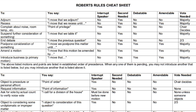Another motion is tabling — to suspend further consideration of something. You want to put it on hold and talk about it later. So you would say 'I move that we table' whatever discussion is happening. You cannot interrupt the speaker, and you do need a second. It is not debatable and not amendable, and you need a majority vote — 50% plus one. If that motion passes, it gets put on the table for another meeting, or later in that meeting.